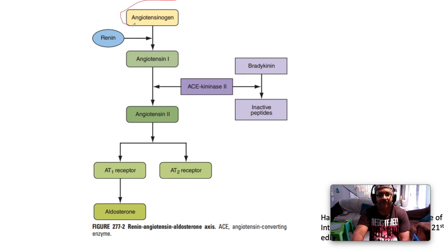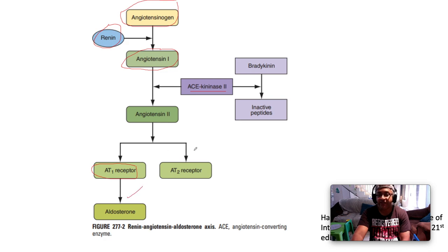Angiotensinogen is produced by the liver, and renin is produced by the juxtaglomerular apparatus in the kidneys. Renin converts angiotensinogen — the inactive form — to angiotensin I. Angiotensin-converting enzyme, also called kininase 2, converts angiotensin I to angiotensin II. Angiotensin II then acts on the angiotensin I receptor, producing aldosterone, and also acts on the angiotensin II receptor causing efferent arteriolar vasoconstriction.